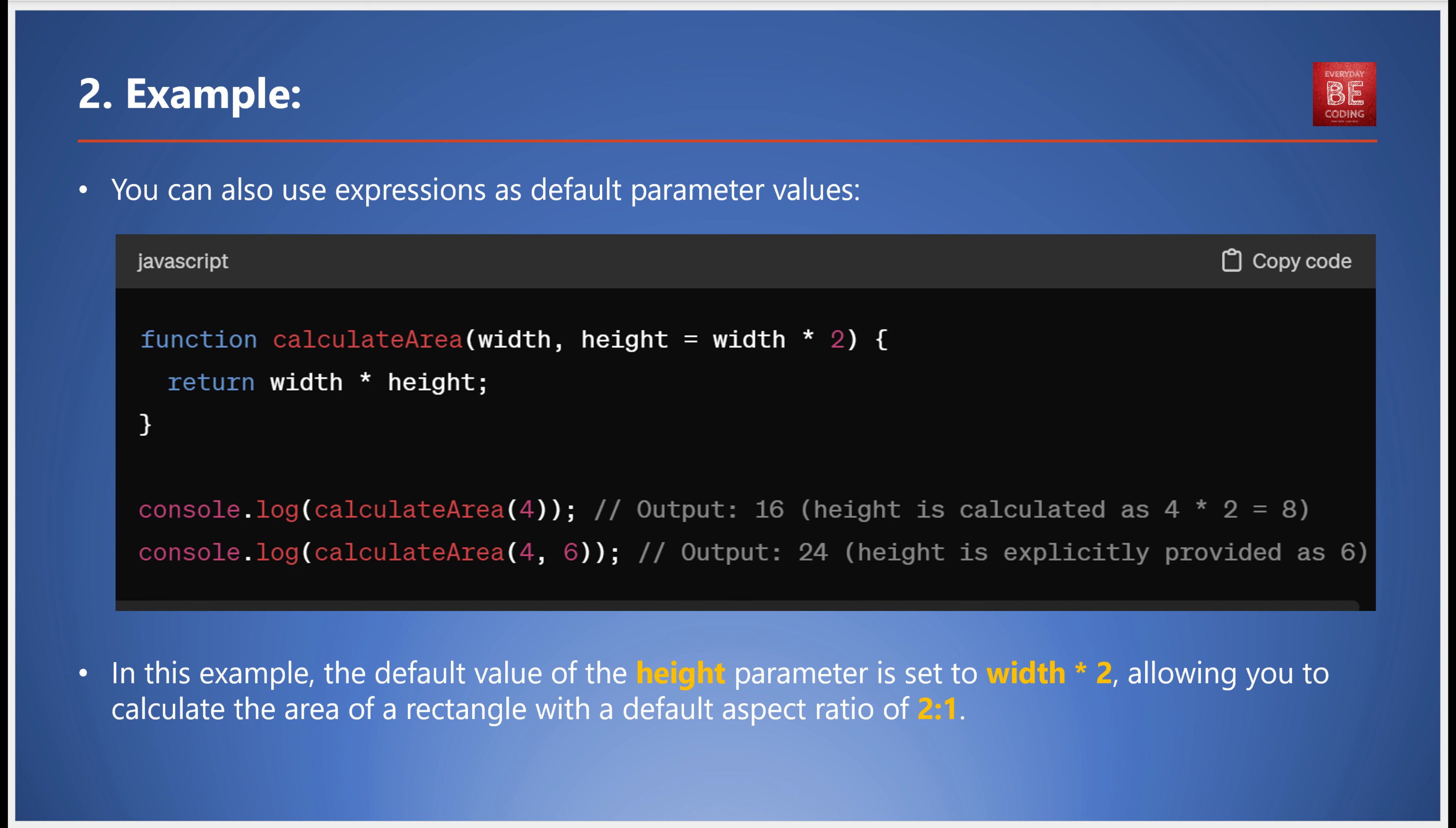So if you call calculateArea with 4, the output will be 16, since height is calculated as four times two, which equals eight. If you call it with 4 and 6, the output will be 24 as height is explicitly provided as six.